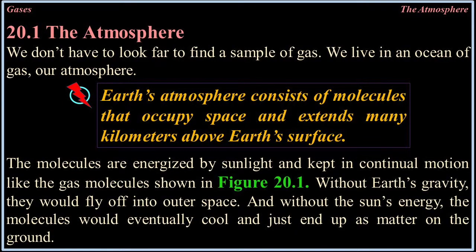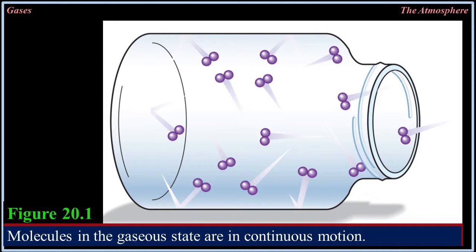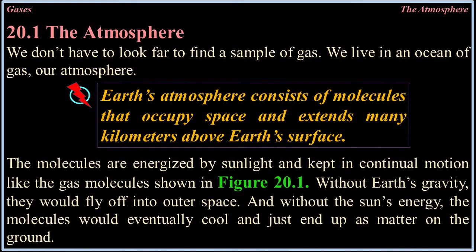20.1 The Atmosphere. We don't have to look far to find a sample of gas — we live in an ocean of gas, our atmosphere. Earth's atmosphere consists of molecules that occupy space and extends many kilometers above Earth's surface. The molecules are energized by sunlight and kept in continual motion. Without Earth's gravity they would fly off into outer space, and without the sun's energy the molecules would eventually cool and settle as matter on the ground.